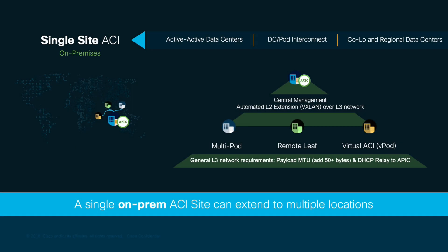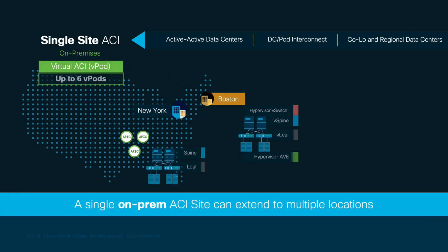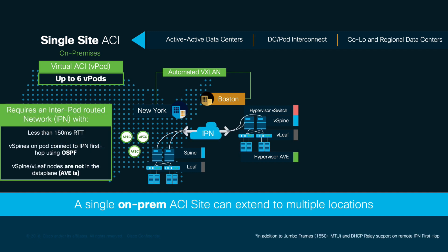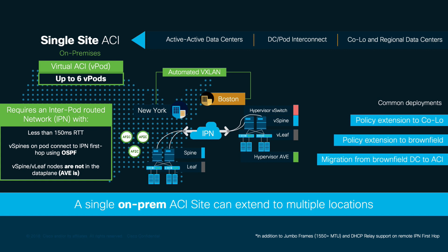Finally, let's briefly cover our third option for single-fabric extension, virtual ACI or VPOD. With VPOD, you run a virtual spine and virtual leaf in the remote location, running vSphere as a hypervisor and leveraging AVE as a data plane on each host. For environments where no Nexus 9000 hardware is available, you can still automate VXLAN connectivity while keeping the same centralized management model. Virtual ACI or VPOD requires an IPN with less than 150 milliseconds in round-trip time, with virtual spines connecting to the first-hop ISN device through OSPF. When using VPOD, the vSpine and vLeaf are not in the data plane; however, they are leveraged for control plane purposes, COOP, and other ACI functionalities. VPOD is commonly implemented for policy extension to co-location environments and brownfields, as well as for migration purposes, and it requires a specific license for the virtual spine and leaf cluster as well as for each AVE host.